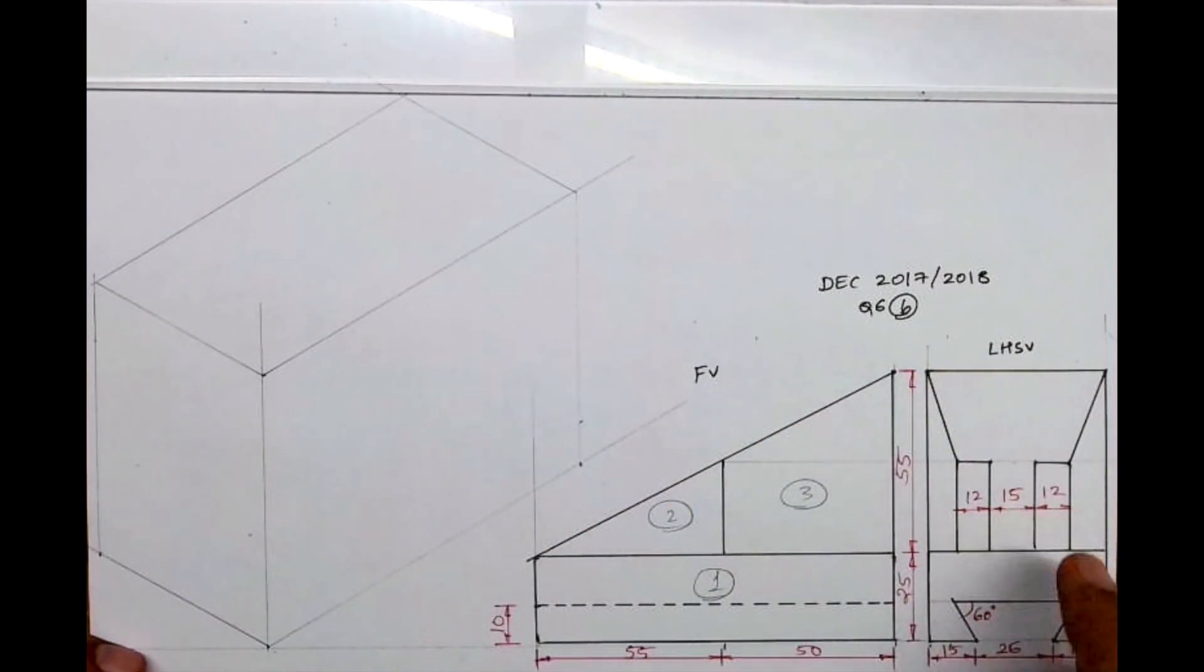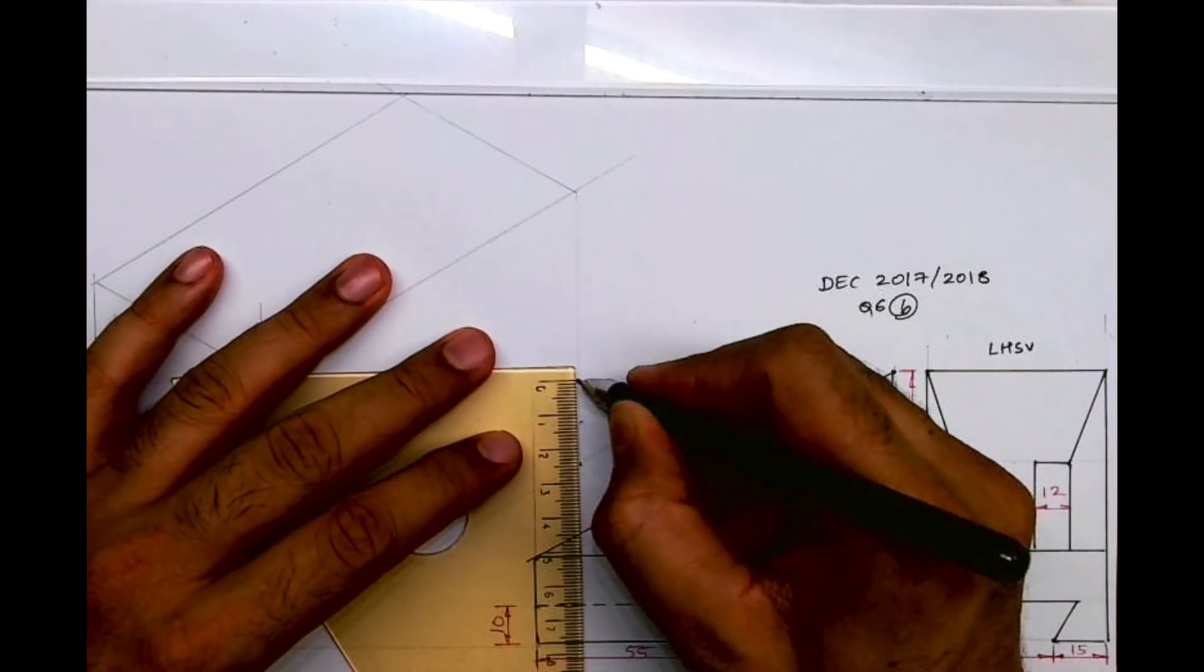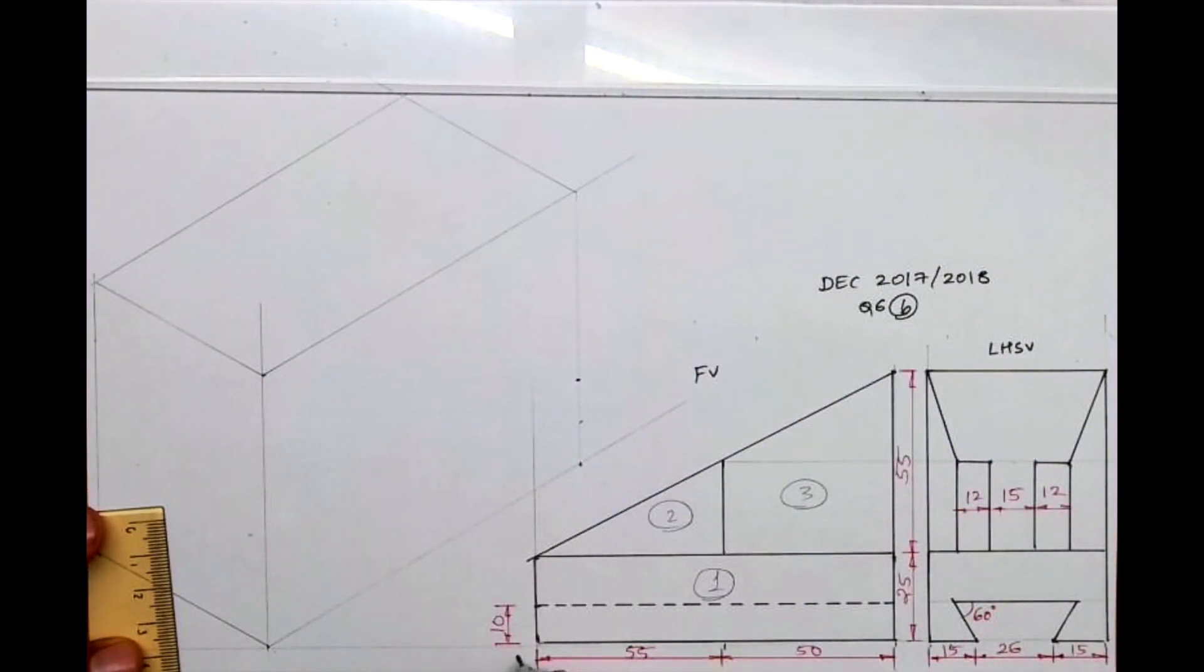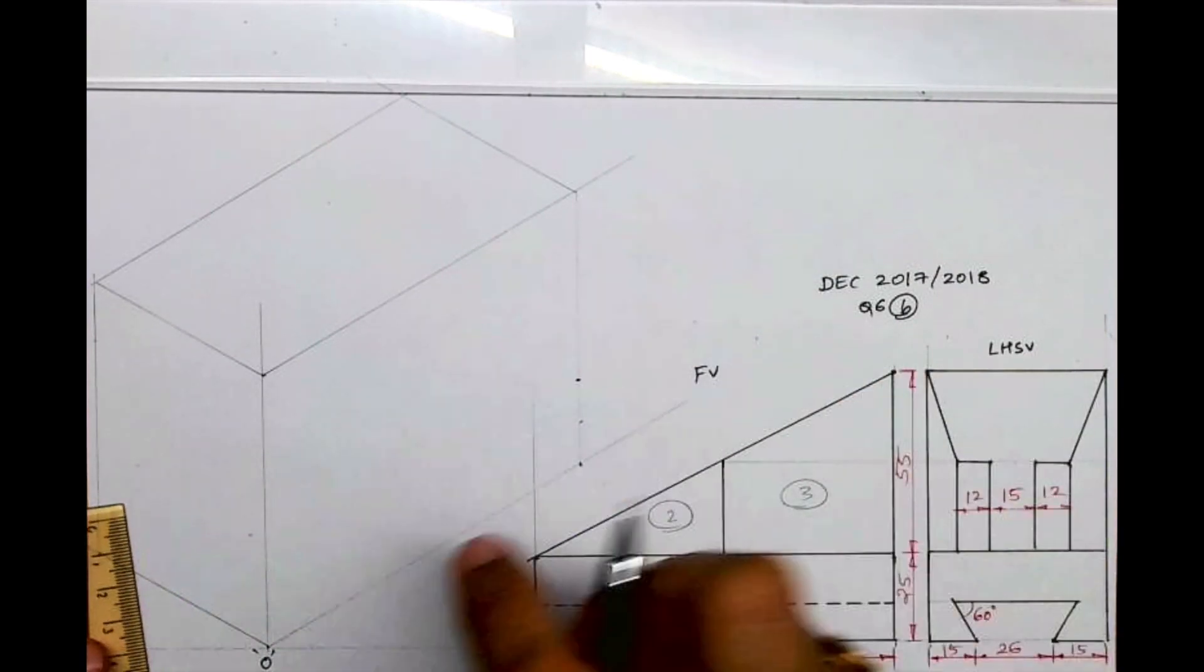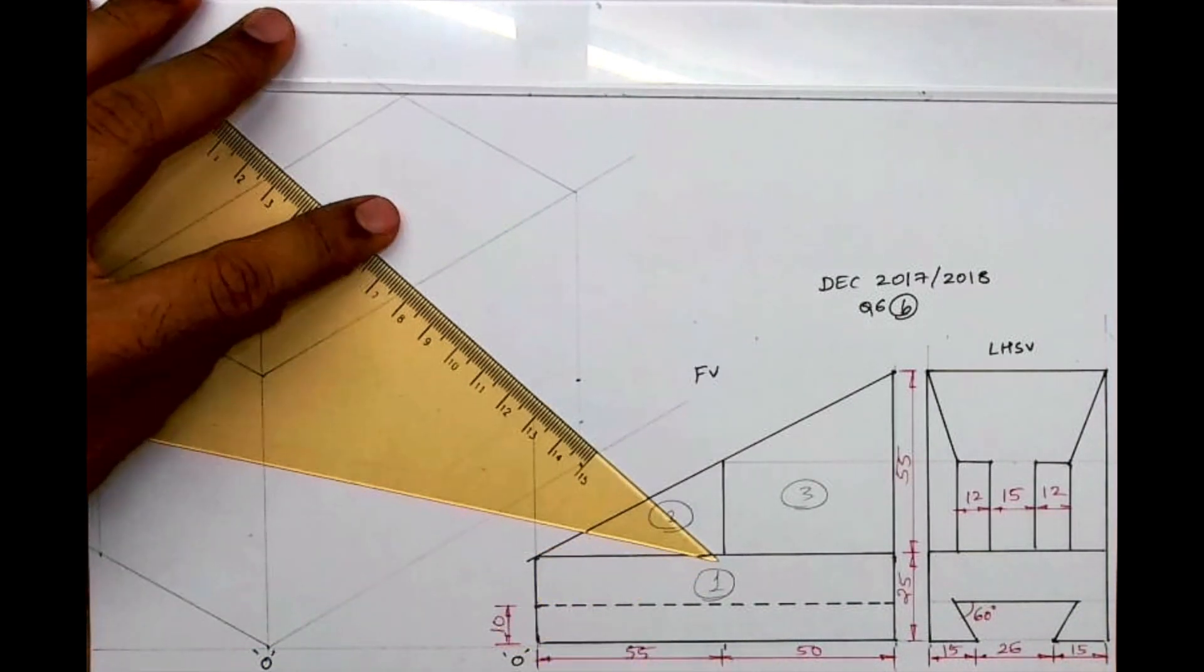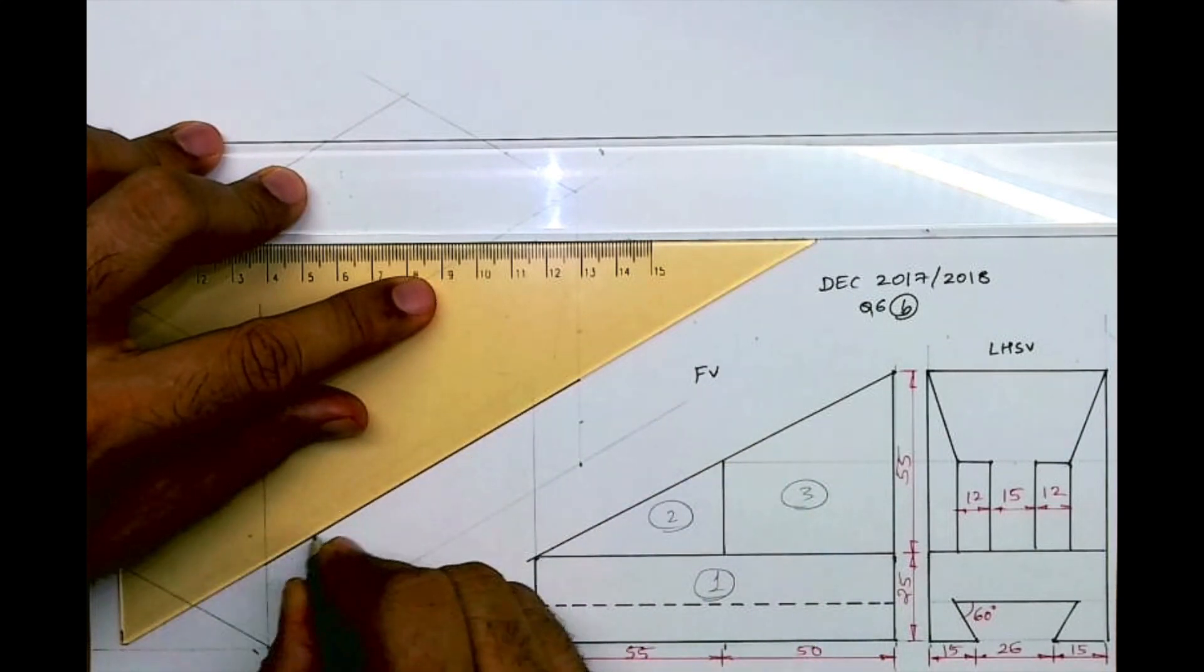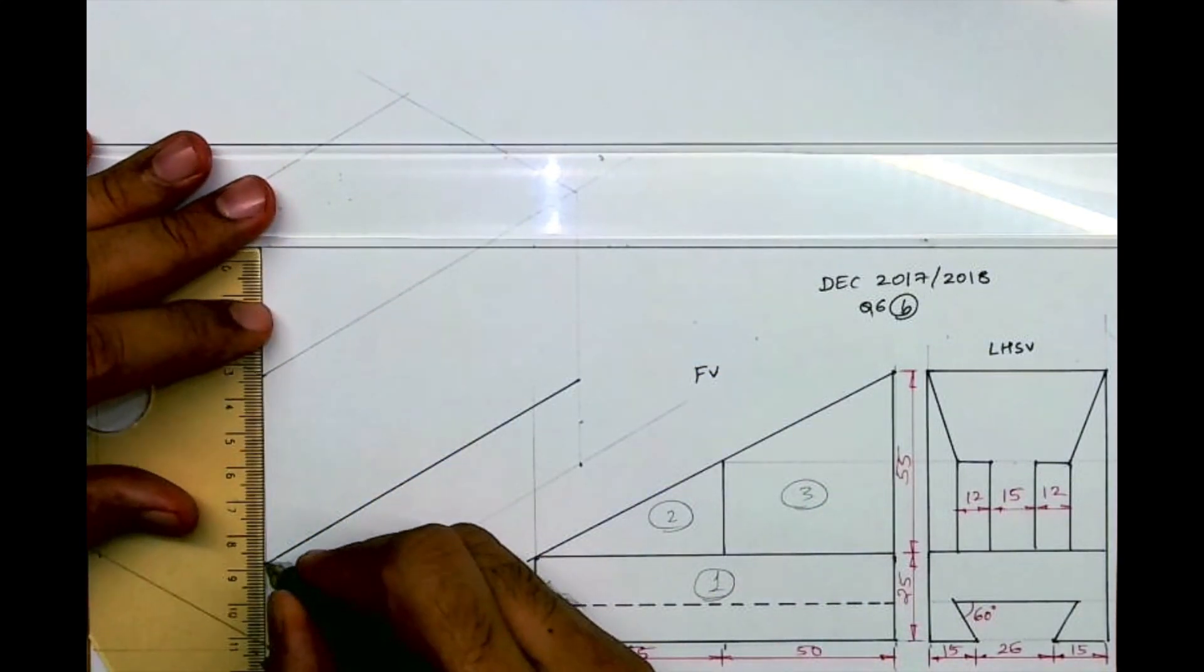First we'll start with part one, so I will take height 25. First I will draw length, width, and height. Length is 55 plus 50, which is 105. Height is 25 plus 55, which is 80, and width is 56. So you mark 25 and you draw a line like this. So we are done with part one.